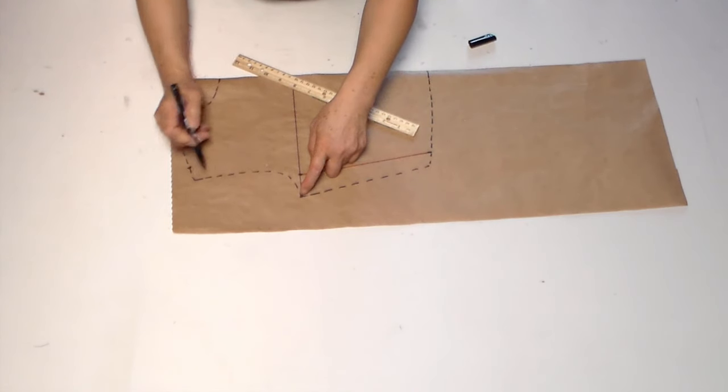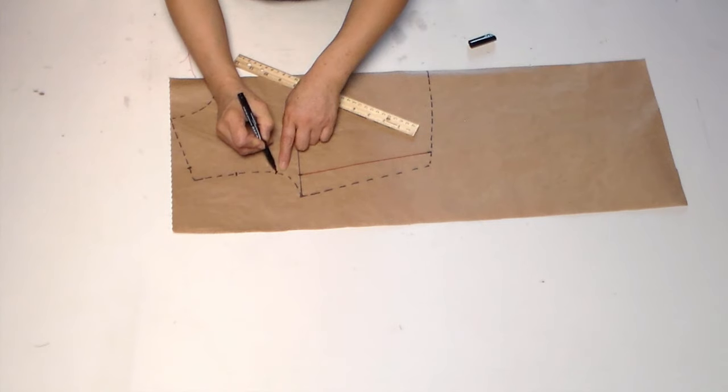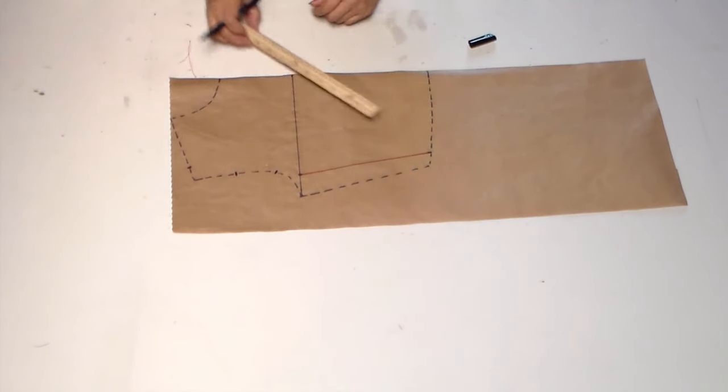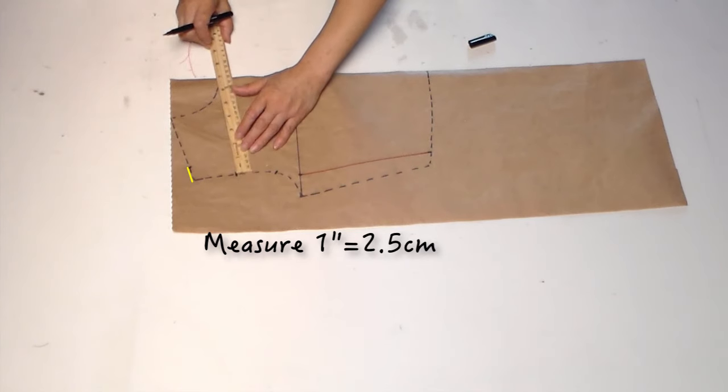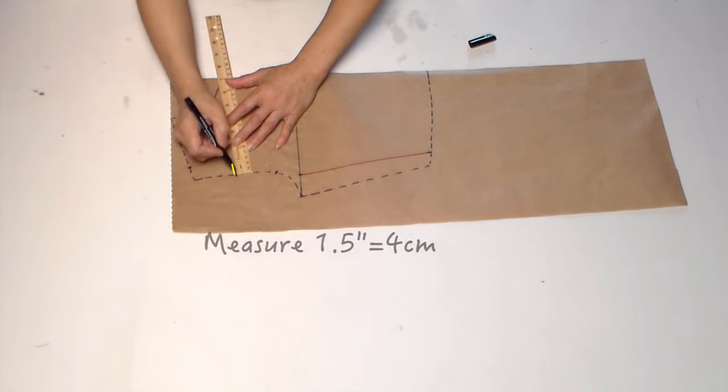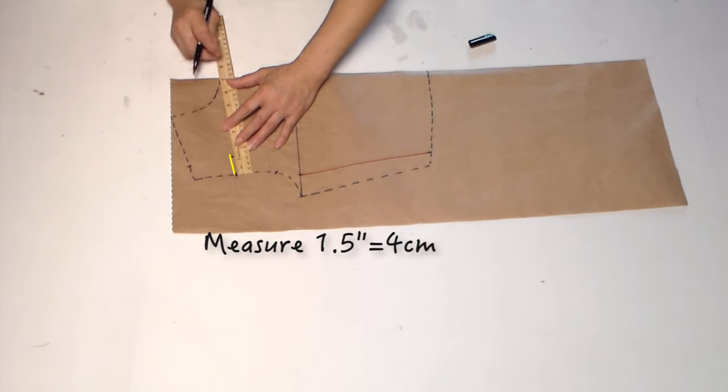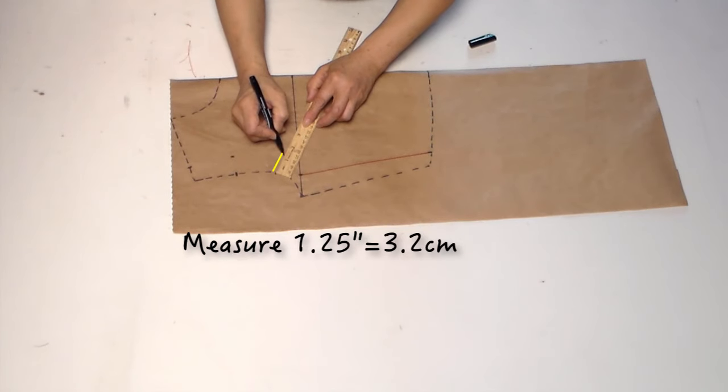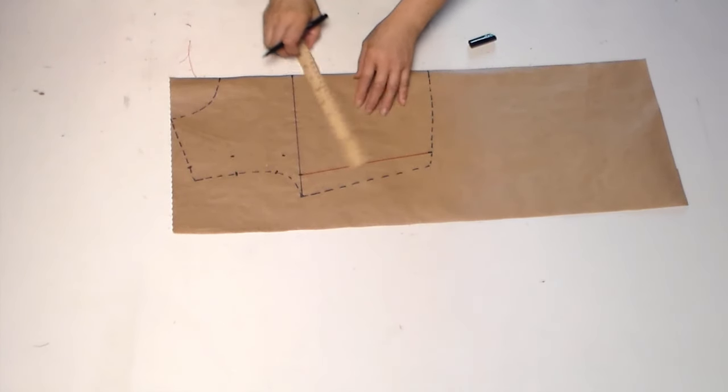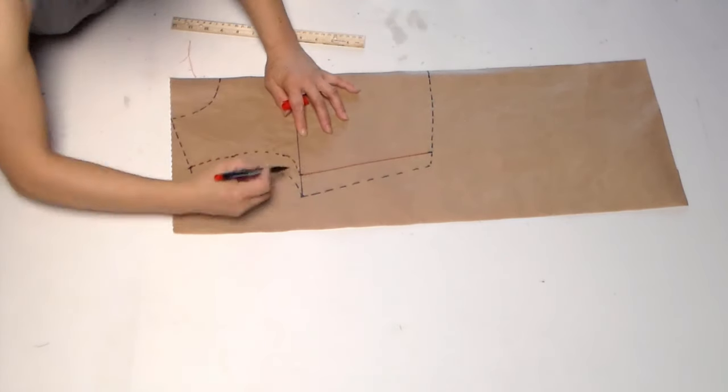Divide the basic armhole into three parts. On top shoulder line, measure 1 inch in. Second point, measure 1.5 inch. Third point, measure 1.25 inch. Now, we connect these points and make a new pattern.